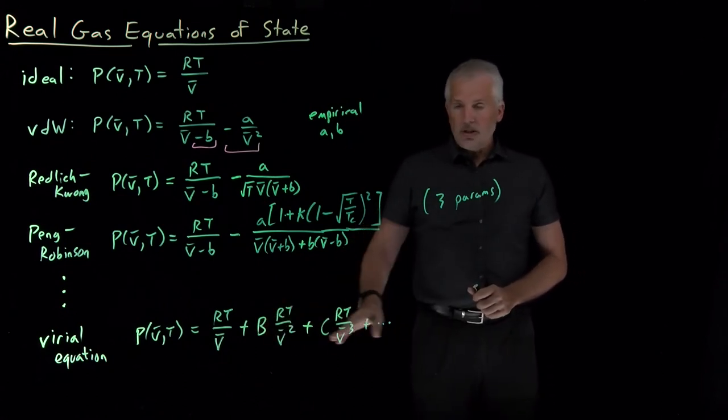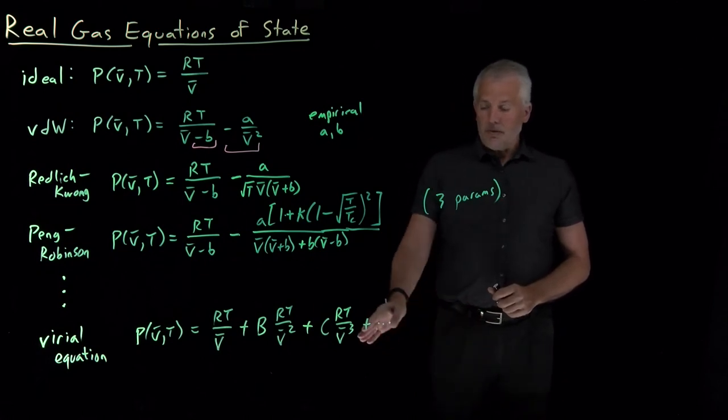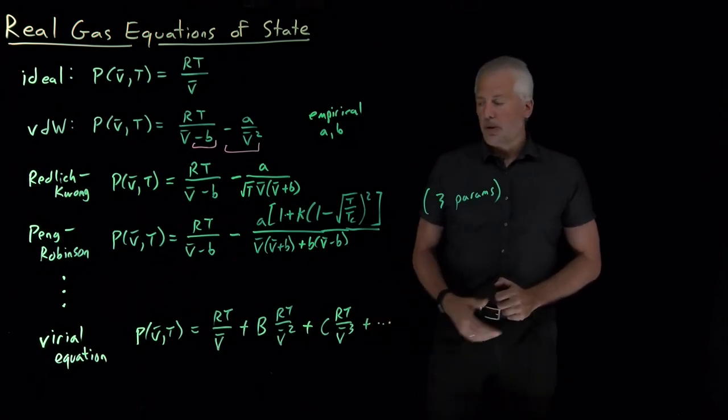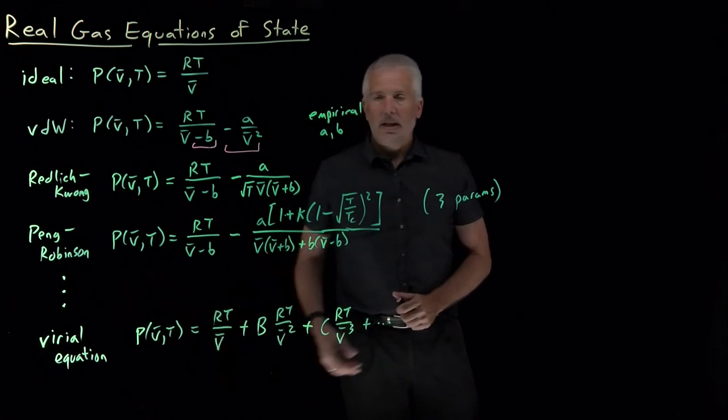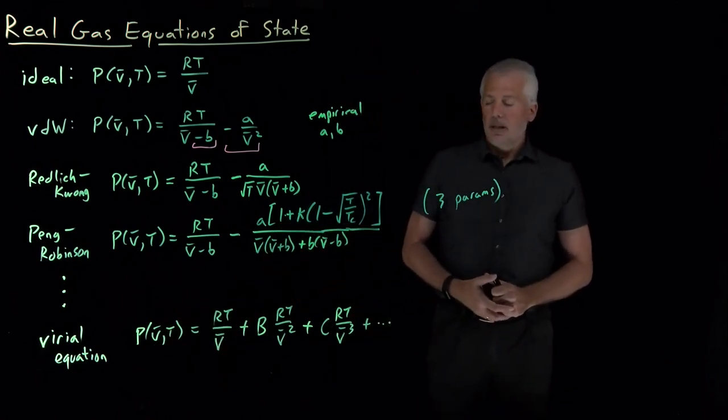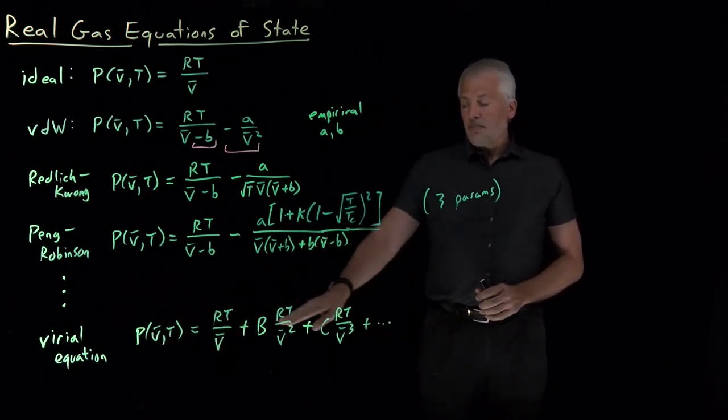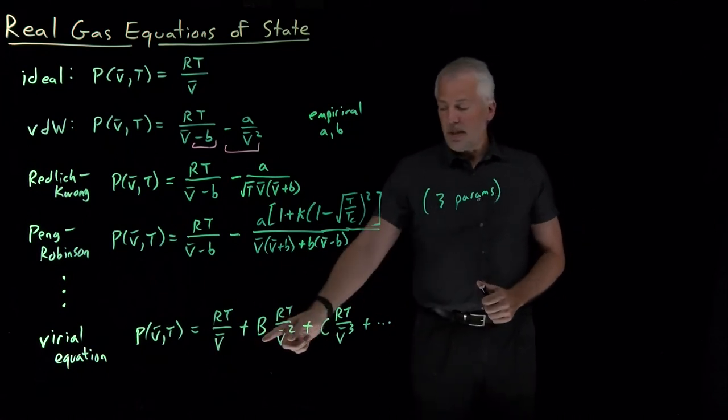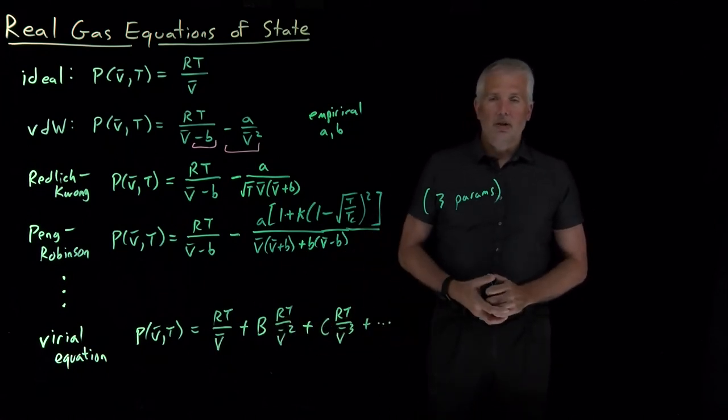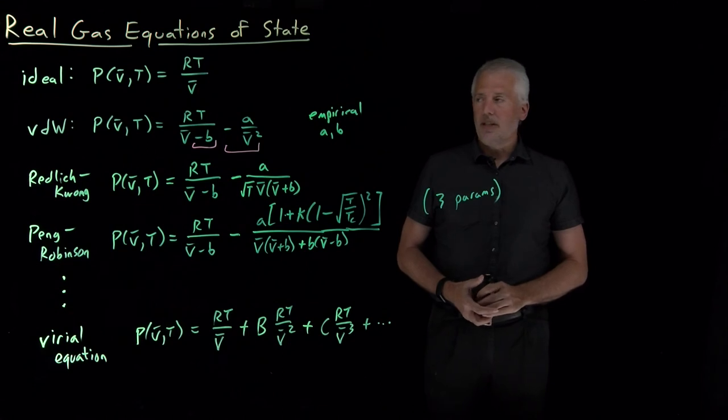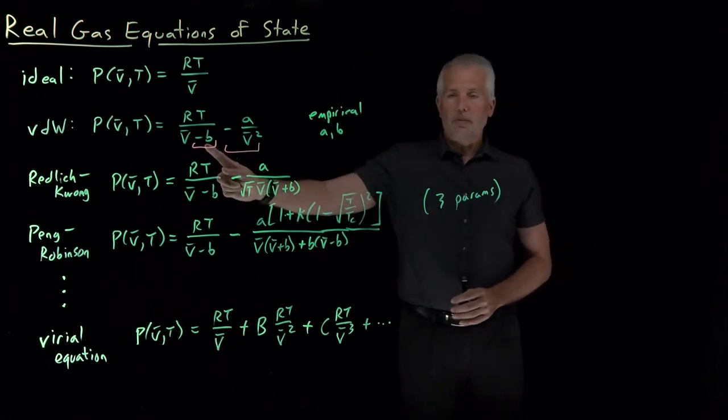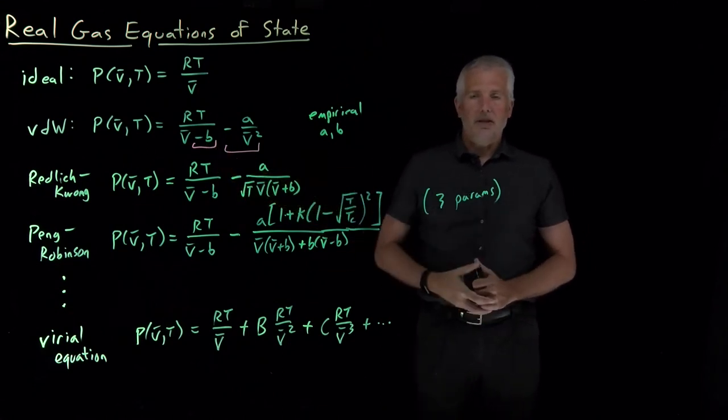The advantage of this equation is it's, in principle, infinitely accurate. If we include all infinity of these terms, we can fully describe the pressure as a function of the volume and the temperature. The disadvantage is, of course, that it's an infinite series, and also that these B and C terms don't any longer have an interpretation that's nearly as clean as saying it's the volume of the molecule or the strength of the interaction between the molecules.